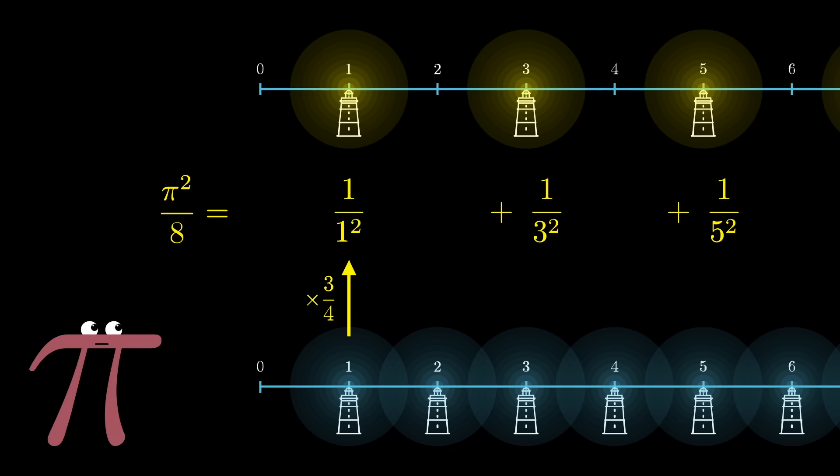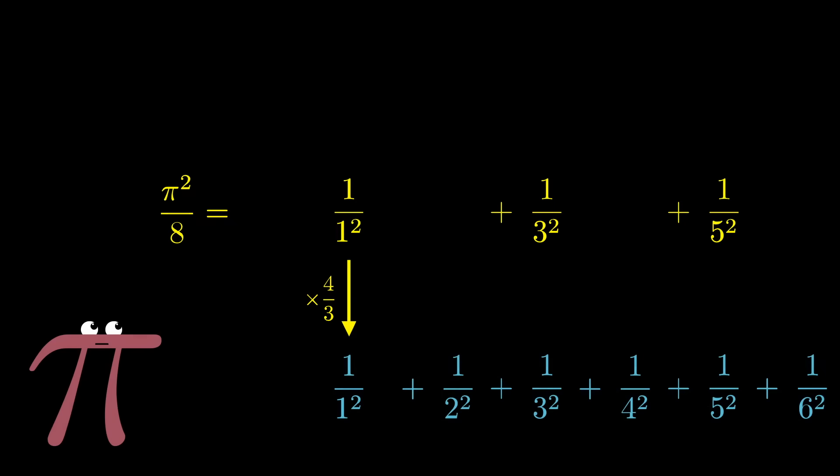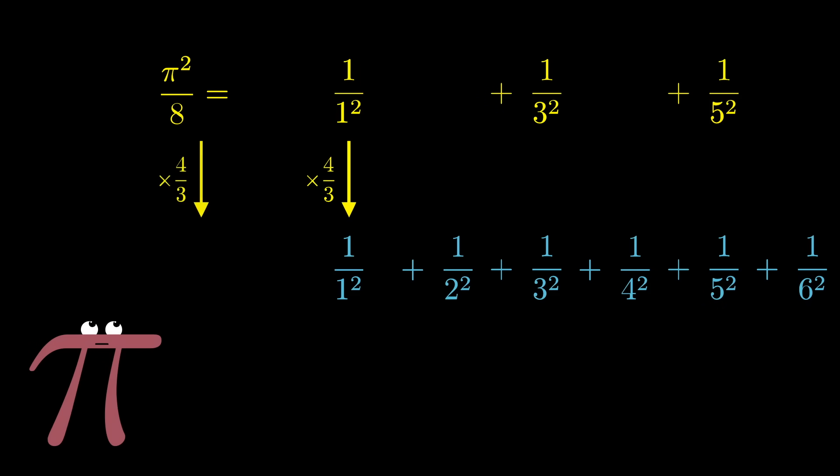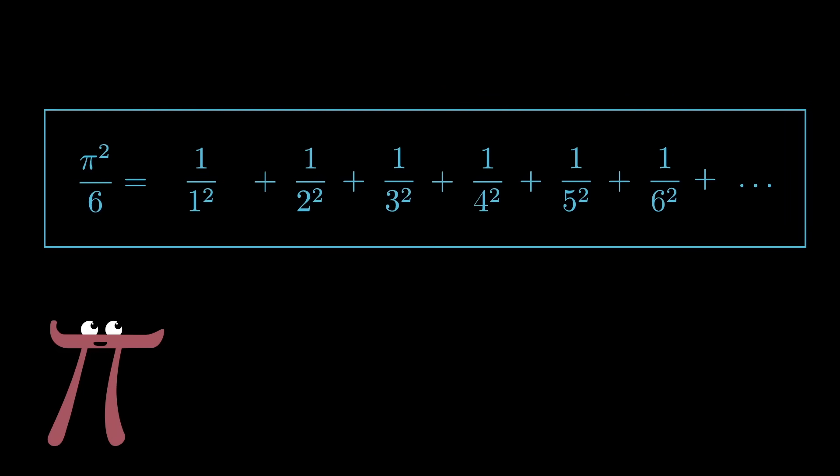So if we just flip that around, that means going from the sum over the odd numbers to the sum over all positive integers requires multiplying by 4/3. So taking that pi squared over 8, multiplying by 4/3, bada-boom bada-bing, we've got ourselves a solution to the Basel problem.